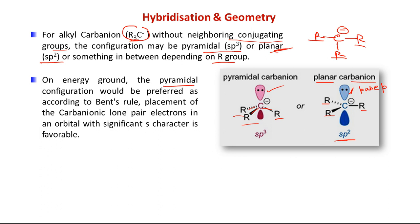On energy grounds, the pyramidal configuration is preferred. According to Bent's rule, the lone pair prefers the orbital with more s-character. So the carbanion lone pair should be in an orbital with significant s-character. In sp3, the lone pair is in an sp3 hybrid orbital; in sp2, it would be in a pure p orbital. Since sp3 has higher s-character, pyramidal is energetically preferred.